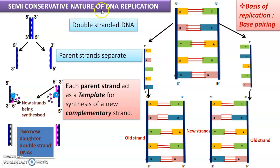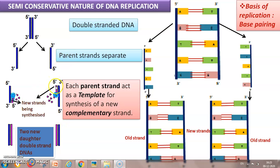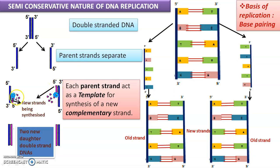The model accepted as true is the semi-conservative model. 'Semi' means half, and 'conserve' means to save — so it saves half of the original material. The two parental strands separate and each acts as a template — a molecular structure that decides the sequence of the new strand. How nucleotides are added to form the new strand is decided by the bases on the parental strand, following the complementary base pairing rule.